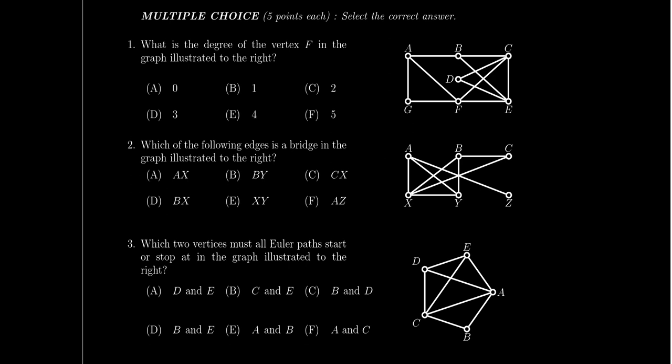Related to degree is the idea of adjacency — like, who is adjacent to A? A is adjacent to B, F, and G. But A is not adjacent to D because there is no edge connecting A to D. There is a path from A to D, but that's a topic for a different question. Question one covers basic vocabulary about graphs: degree of a vertex and which vertices are adjacent to which.